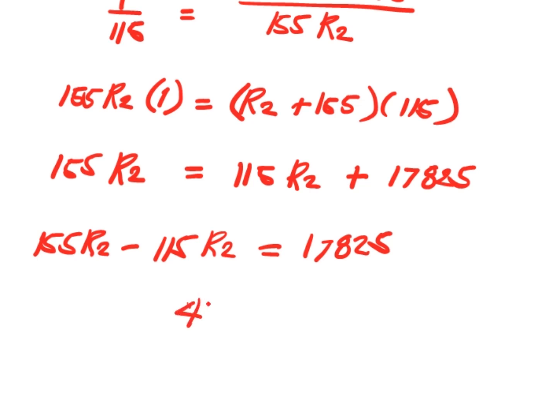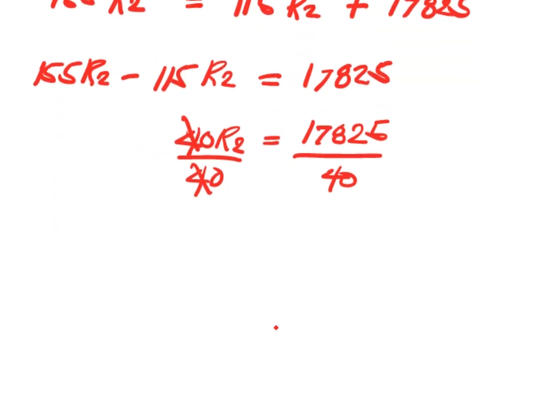So R2 equals 17,825 divided by 40. Divide this by 40, cancel. R2 now is equal to 445.625.